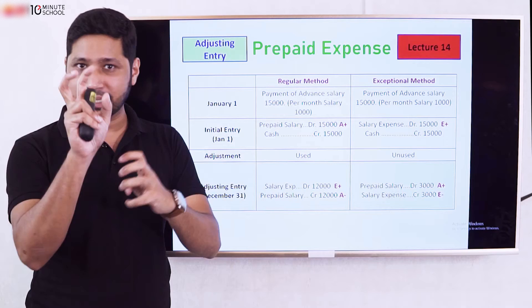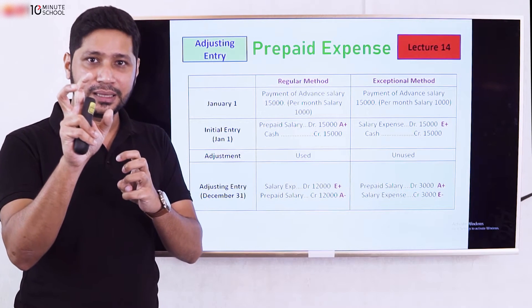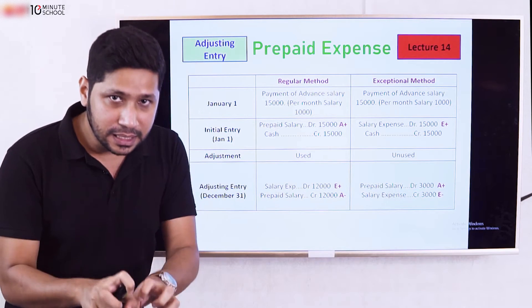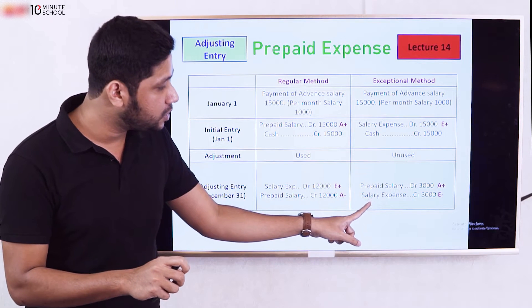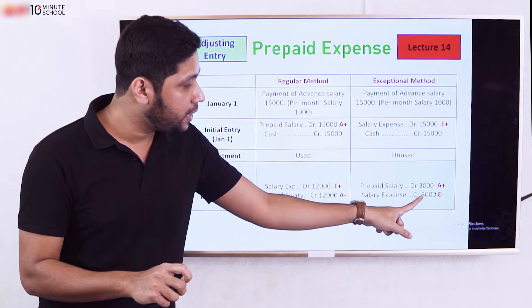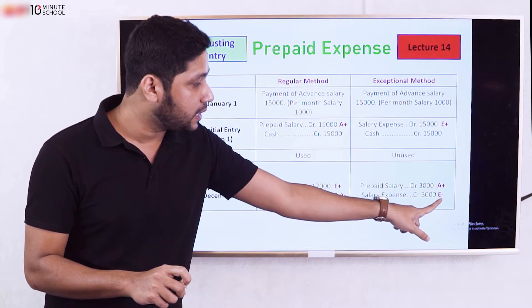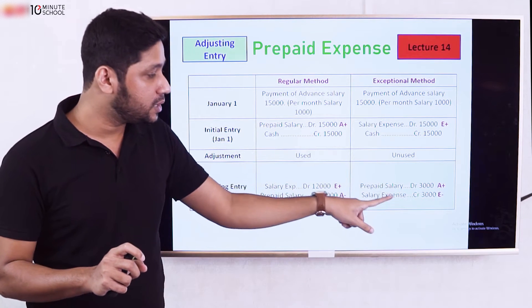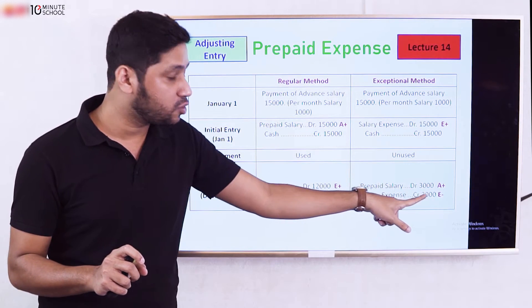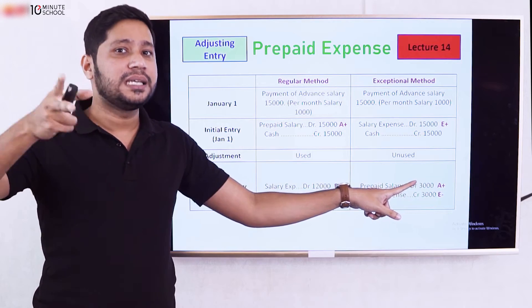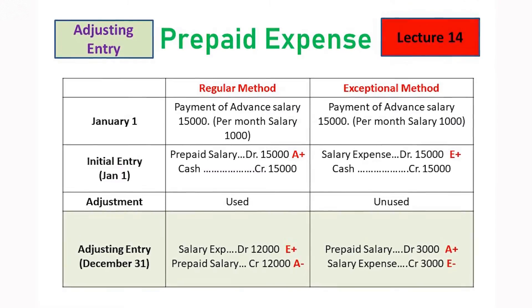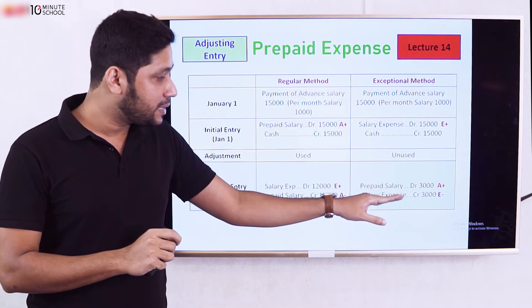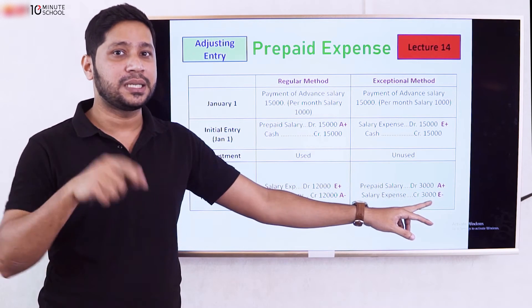If we need to record an additional expense of $3,000 as an adjustment, the salary expense credit is $3,000. The adjusting entry involves Salary Expense at $3,000 and Prepaid Salary at $3,000, bringing the total salary expense to the correct amount.